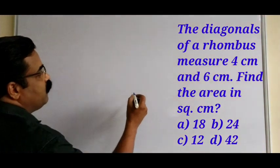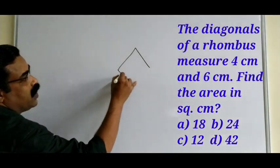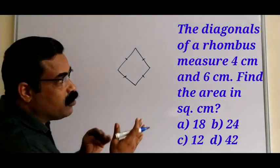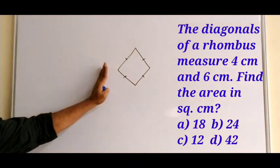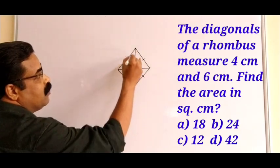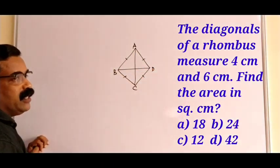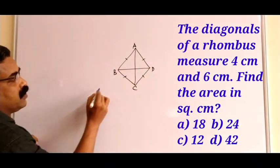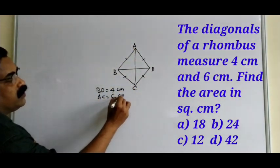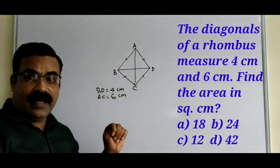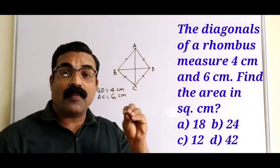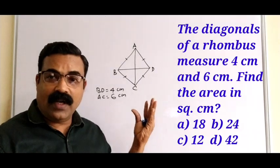It's a very easy question. A rhombus has all four sides equal. In this particular question, the diagonals measure four centimeters and six centimeters. We name the rhombus ABCD, so BD equals four centimeters and AC equals six centimeters. You don't need to write all this in your exam — just understand the properties of a rhombus, apply the direct formula, and find the answer.